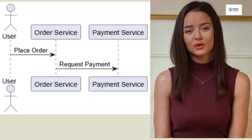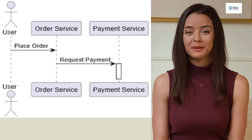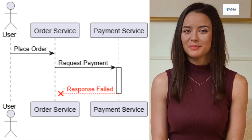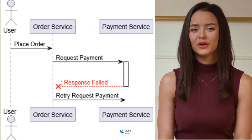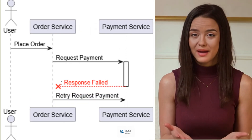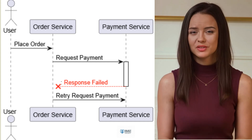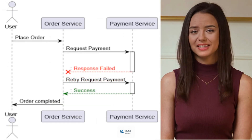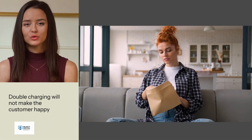Let's take a real example. Order service calls payment service to charge the user. Payment service actually processes the payment successfully, but the response never returns — possibly due to a network glitch, timeout, or broken connection. The order service, using one of the retry patterns, will send the payment request again. The payment will be processed successfully this time also. The order service will receive a successful response, and the user will receive the notification: order completed.